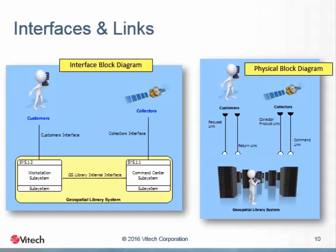Having completed the allocation of the behavior to the physical architecture design, we can now add detail to the physical implementation of the interfaces between the various components. Interfaces represent an abstract understanding of the connection between components, while links represent the physical implementation of that connection. We can only identify the physical nature of the connection once we know the physical component that will implement that behavior. The logical connections are known long before the physical implementations of those connections are clear — whether working top-down, middle-out, or bottom-up.